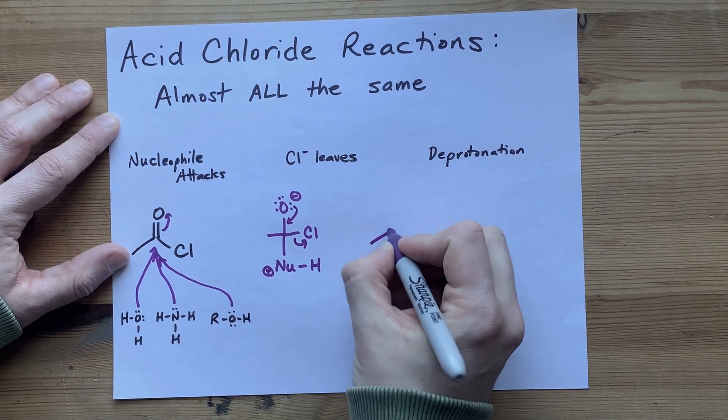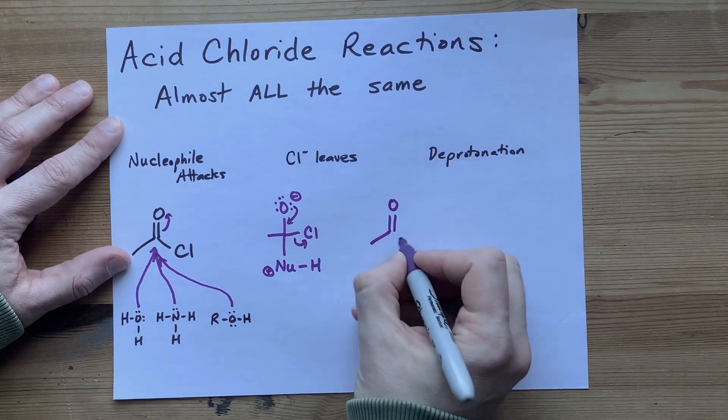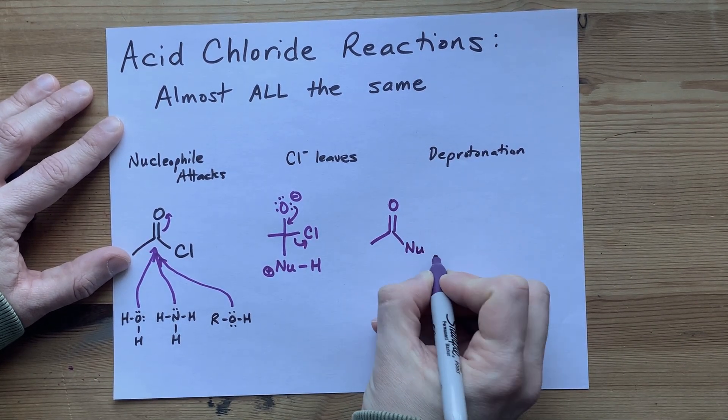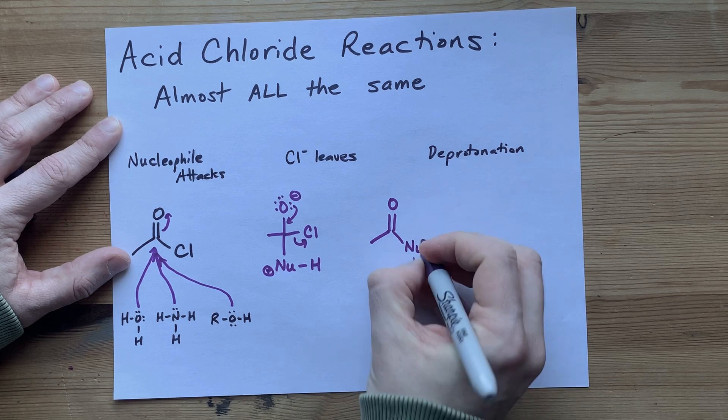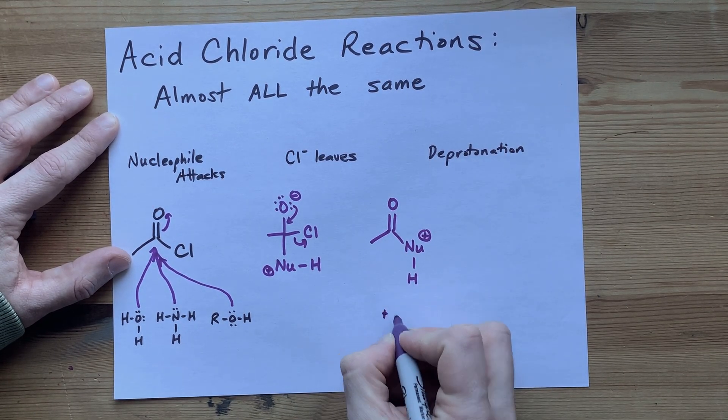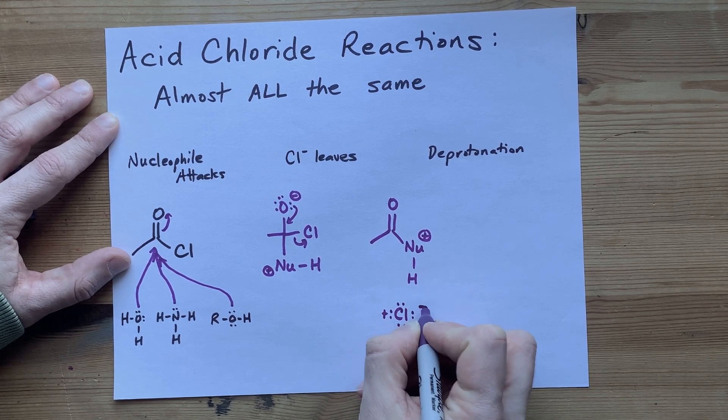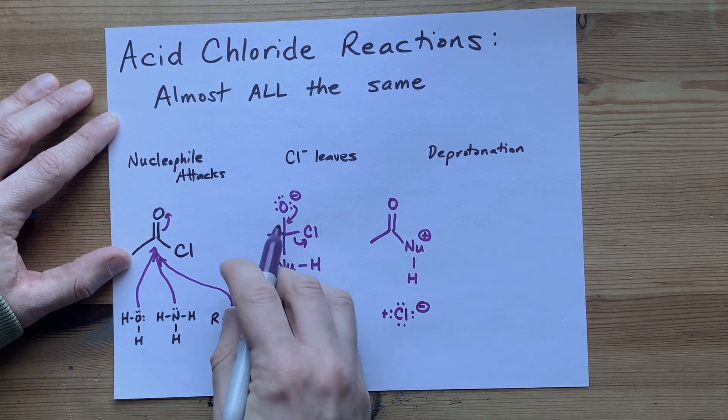So you end up with carbon chain, double bonded oxygen reformed. You still are connected to the nucleophile, and it still has an H on it. It still has its formal charge of plus one, but you made Cl minus as a byproduct. That is the chloride that was a great leaving group here.